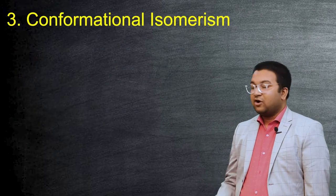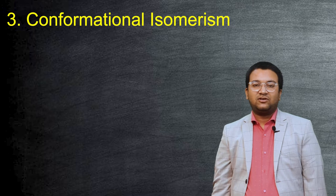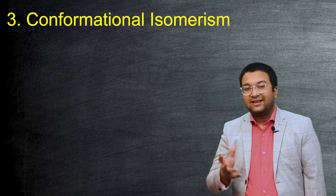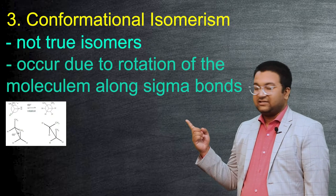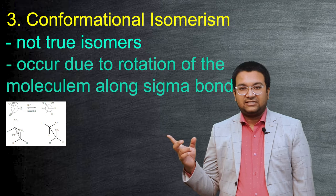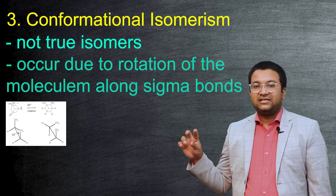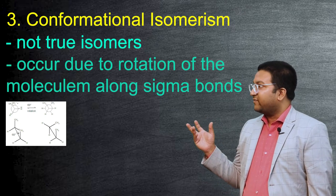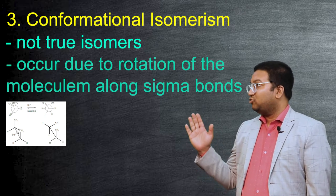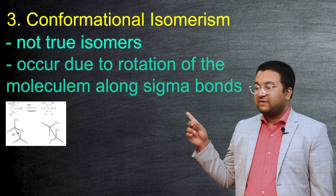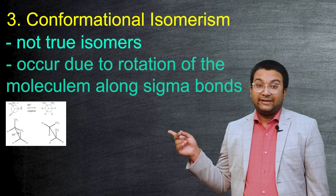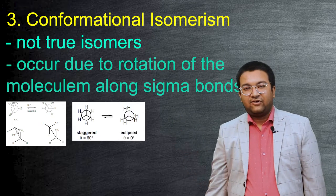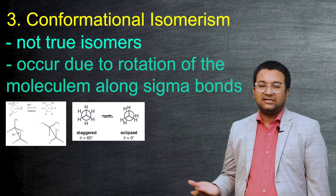The third one is conformational isomers. Conformational isomers are not really true isomers, but what happens here is that the single bond rotation, as we can see in ethane, the C-C single bond is able to rotate on its own. This rotation causes different types of arrangement between the two opposite faces of carbon. For example, the above one is called the eclipsed form because every bond eclipses another one, and the other one is called staggered form.